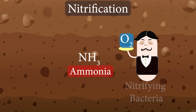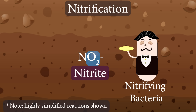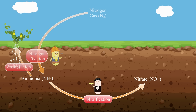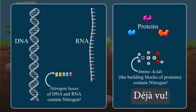Nitrification is done by nitrifying bacteria. These bacteria oxidize, or add oxygen, to ammonia in chemical reactions that first convert the ammonia to nitrite, NO2-, and then to nitrate, NO3-. Because oxygen is needed for these reactions, nitrification happens best in soils that are well aerated. Like ammonia, nitrate is a plant fertilizer because it can be assimilated and used to make key biomolecules — DNA, RNA, proteins, etc.